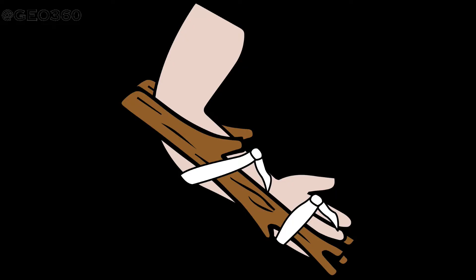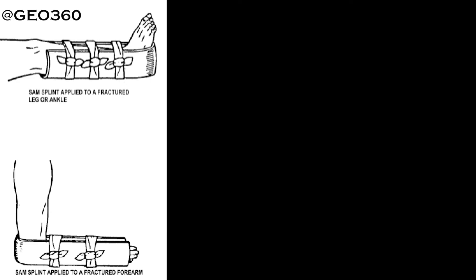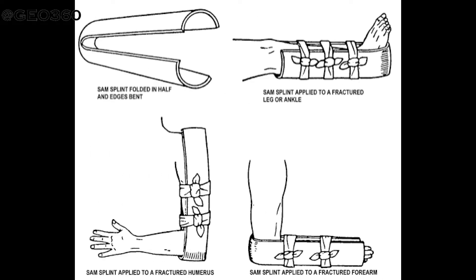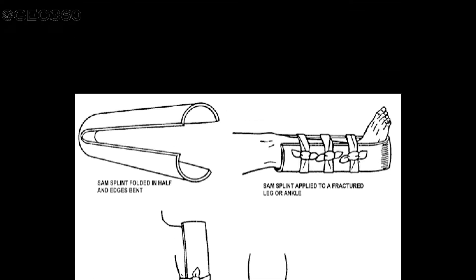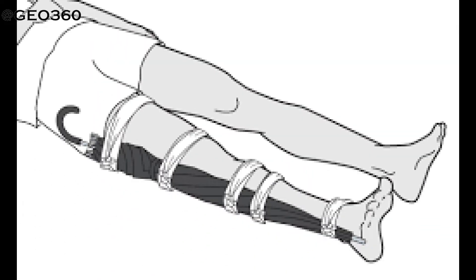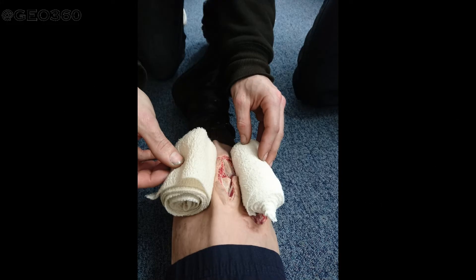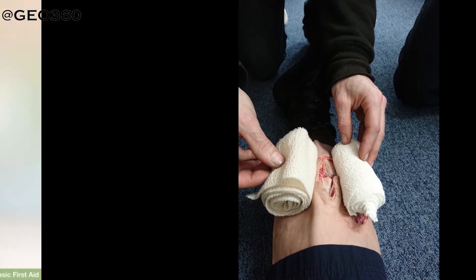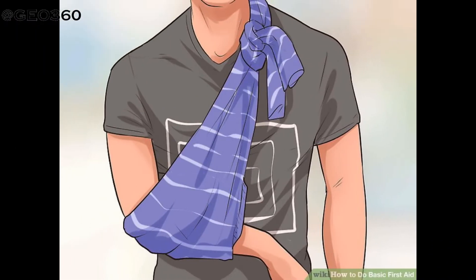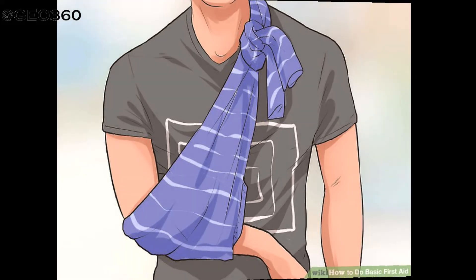A splint is a rigid piece of wood, metal, or plastic applied to the fractured limb to support it and prevent further movement of the broken bones. Reasonably wide splints are better than narrow ones. In emergencies, walking sticks or umbrellas can also be used. Splints must be long enough to immobilize the joints above and below the fractured bone, and should be padded with cotton or cloth. Observe the casualty continuously and do not give them anything to eat or drink.